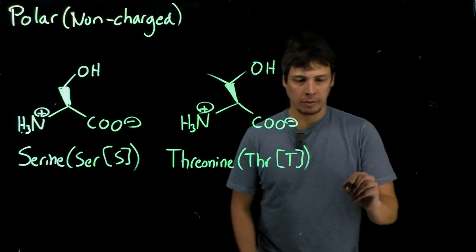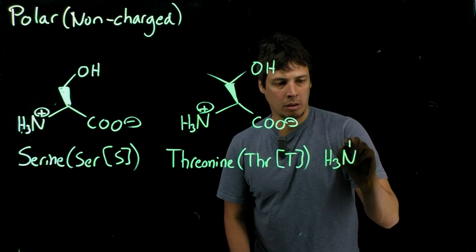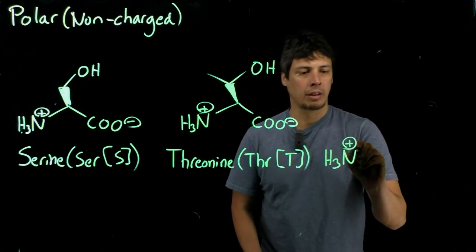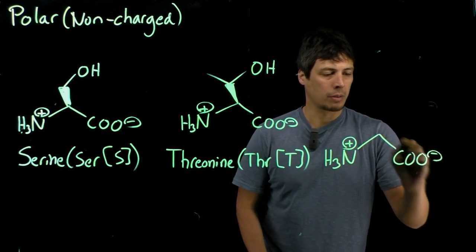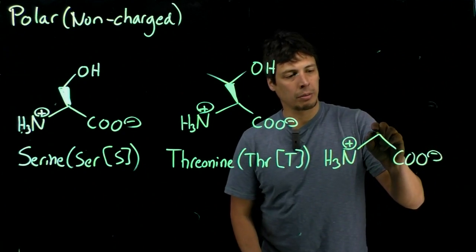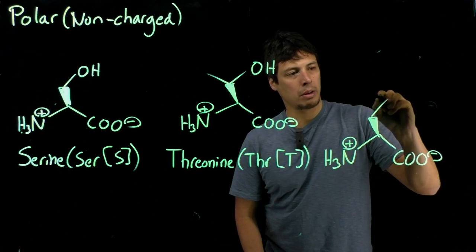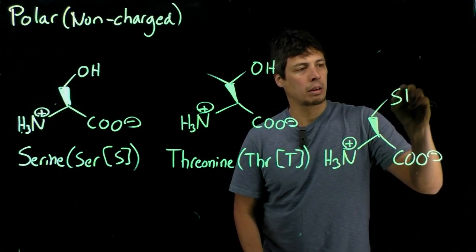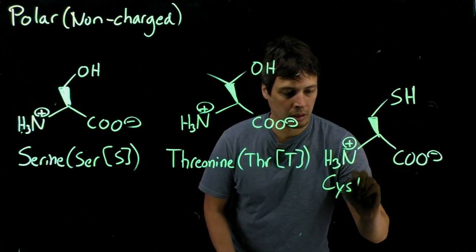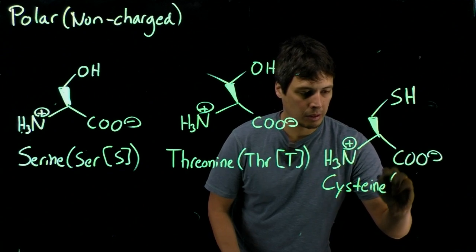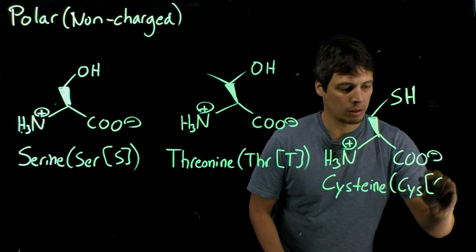And then the last one is the other sulfur containing amino acid, and I've warned you a little bit about this. So I have our alpha amine, alpha carboxylate, alpha carbon with the stereochemistry, and then you have one bend and it's an SH group. So a thiol. And this is called cysteine, it's a three letter code of CYS, and a one letter code of C.